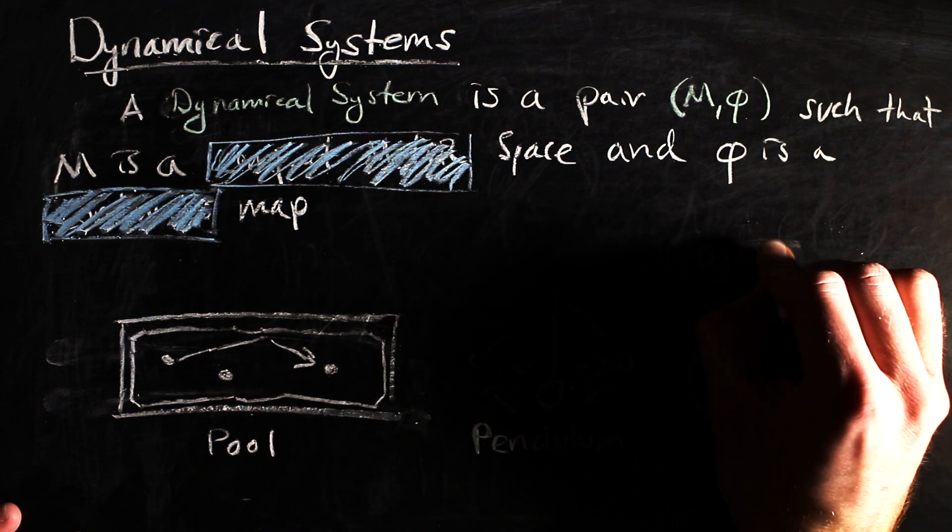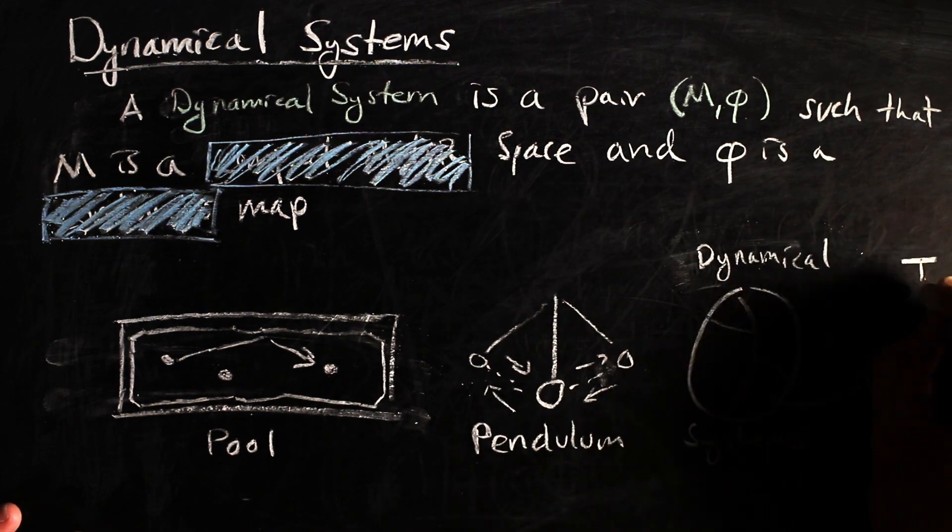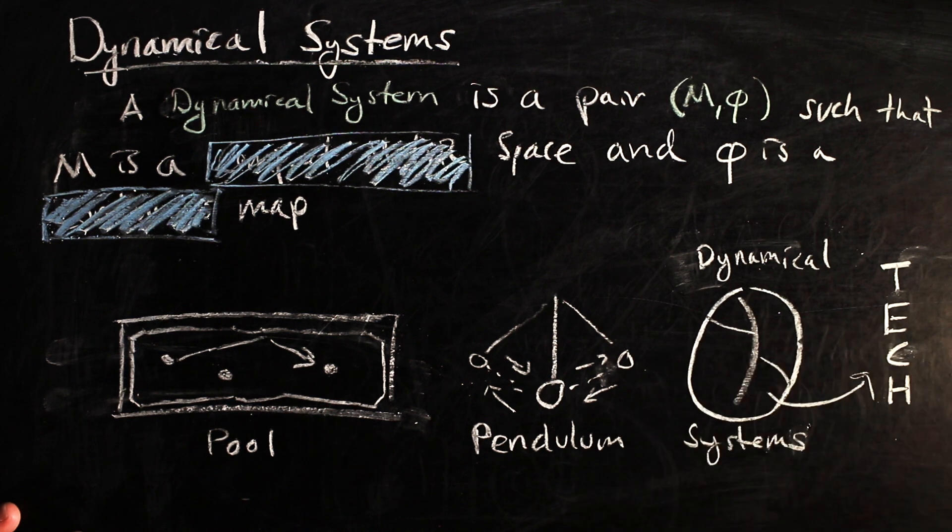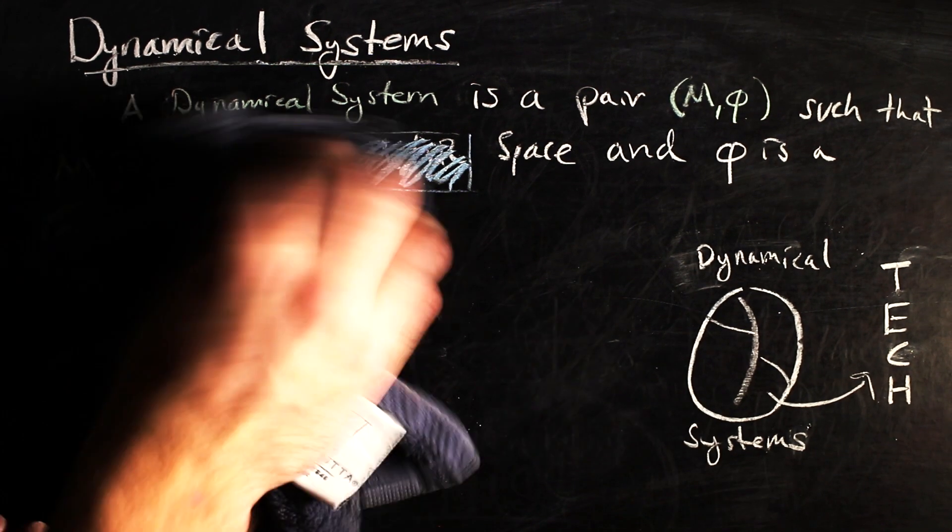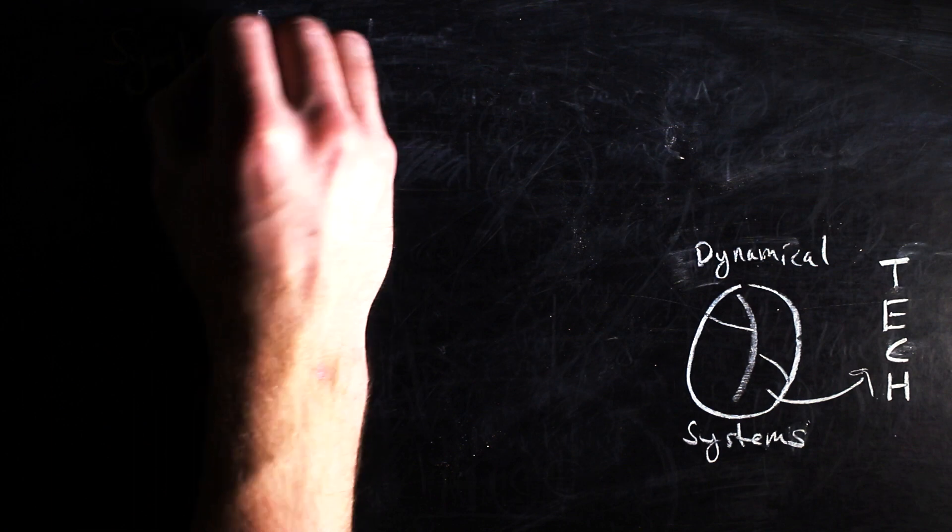However, there are many flavors of dynamical systems theory, some facets of which have applications that are hidden to us by our trust in technology. One such section of dynamical systems theory is the study of symbolic dynamics.